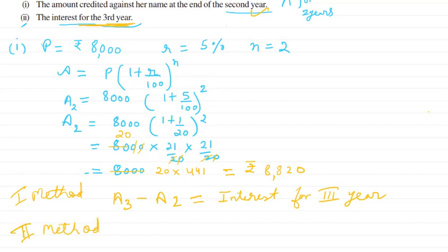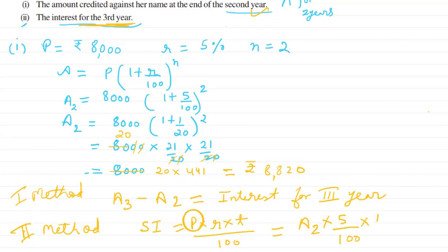In the second method, you use the simple interest formula: SI = P × R × T / 100. Here, in place of P you put A2, because A2 is the principal amount for the third year. The rate remains 5% and T is 1 year, since we are finding interest for the third year only. A2 was found in the first part, so we can directly substitute it.